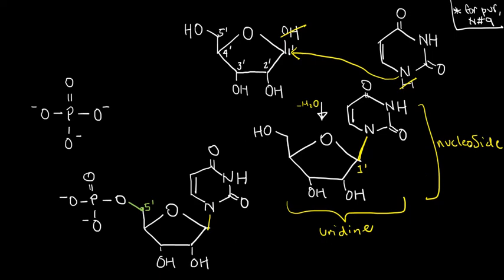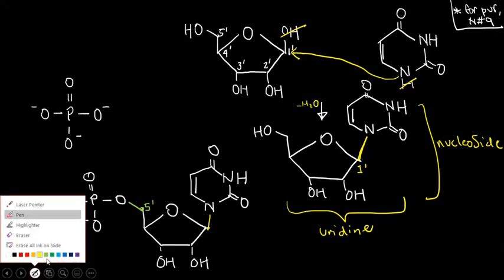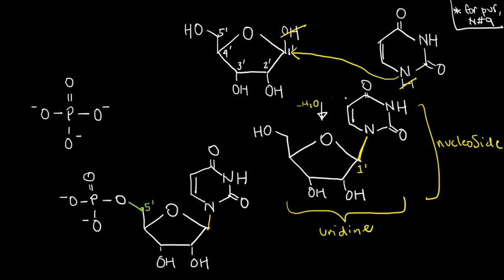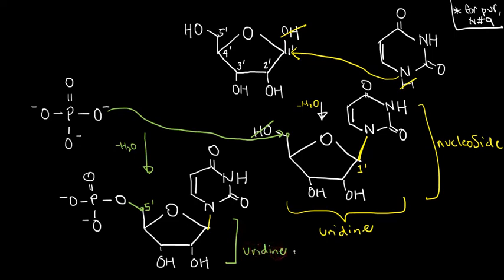Of course, if this is a nucleoside, we need to know how it would become a nucleotide. Remember, the only thing that makes a nucleoside a nucleotide is a phosphate. We can imagine this molecule interacting with a phosphate — the phosphate attacks with a subsequent release of OH. This condensation leads to the phosphate's oxygen attaching to carbon 5'. Since uridine now has one phosphate, we call the entire thing uridine monophosphate.